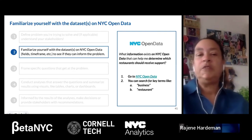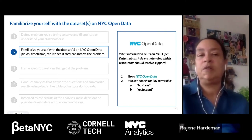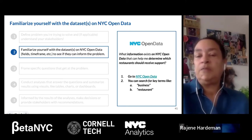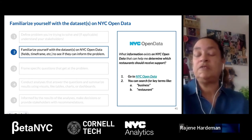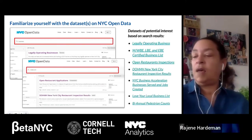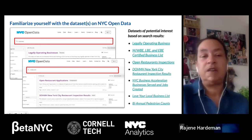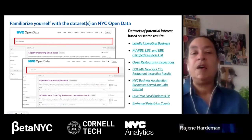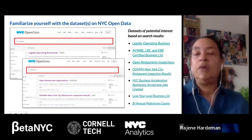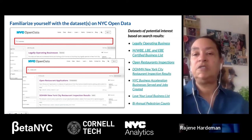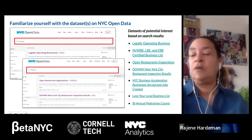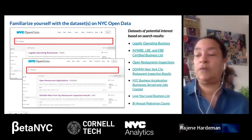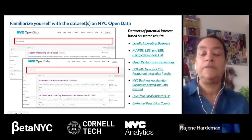The next step is to familiarize yourself with what datasets on NYC Open Data would help inform your problem. For our example, we search the platform using key terms like 'business' or 'restaurant.' This screenshot shows two different searches where we searched for those terms, and on the right side we have a list of datasets that could potentially help us find restaurants that are good candidates for our grant.